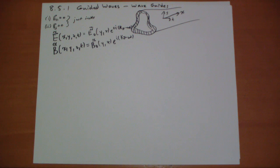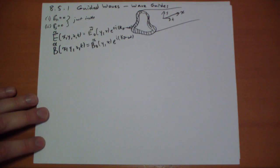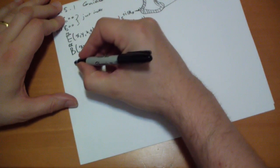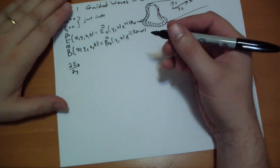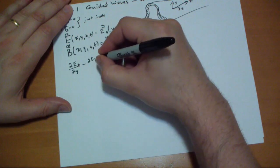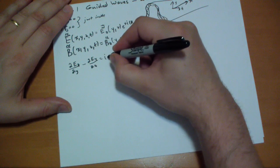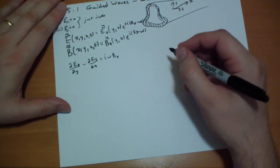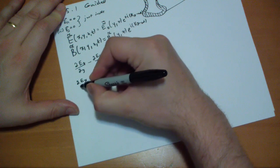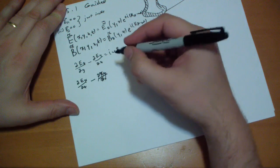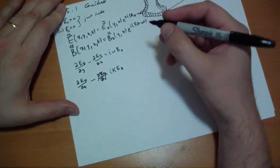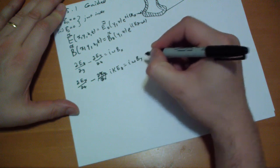When you plug these all together and solve, you get a set of six equations. The derivative of the Z component of the electric field with respect to Y, minus the derivative of the Y component with respect to Z, gives you i·omega times the X component of the B field. And: i·kappa·E_Z equals i·omega·B_Y.